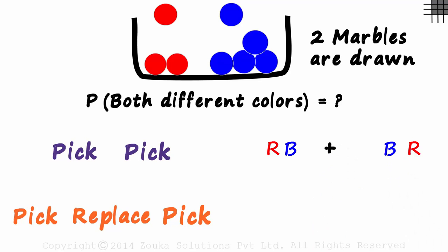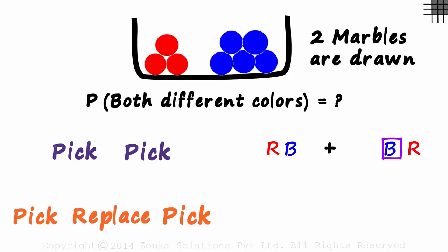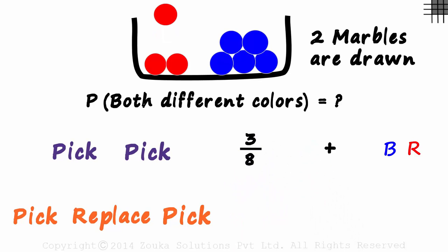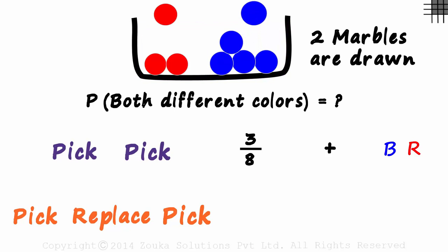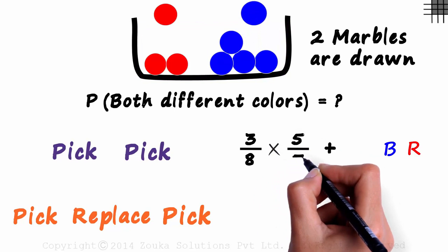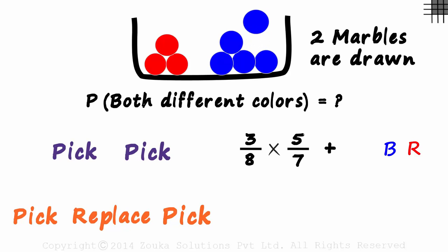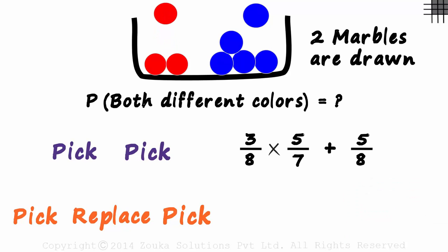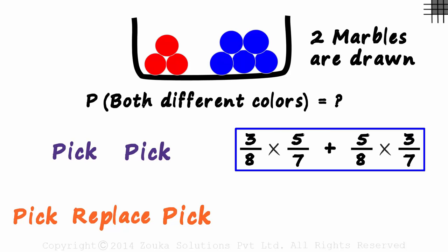Because there is an OR, we write a plus sign: red first then blue, plus blue first then red. For the first case without replacement, the probability of picking a red marble first is 3 over 8. Now there are five blue marbles out of seven remaining, so the probability of picking a blue marble next is 5 over 7. The probability of picking a blue marble first is 5 over 8, and then the probability of picking a red marble is 3 over 7.